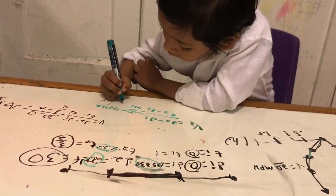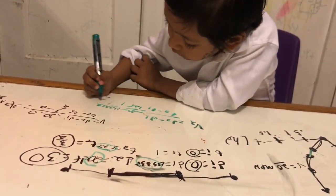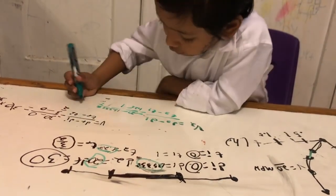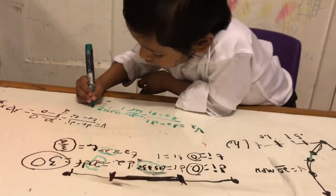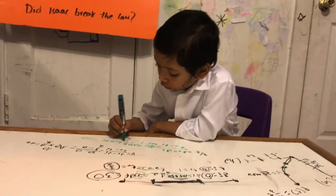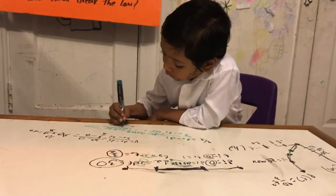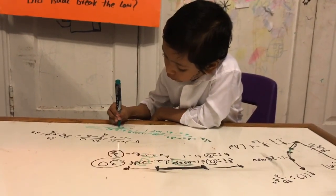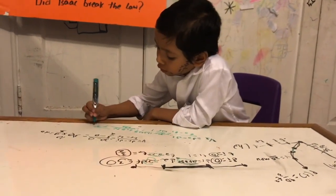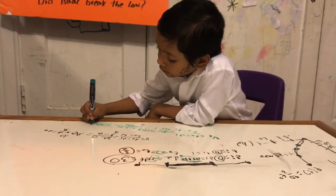The result is 6.74 over 0.22, which equals approximately 32 MPH.